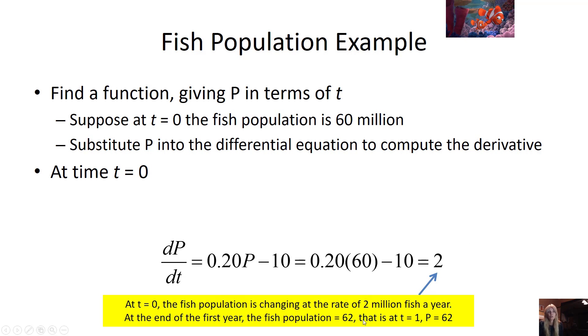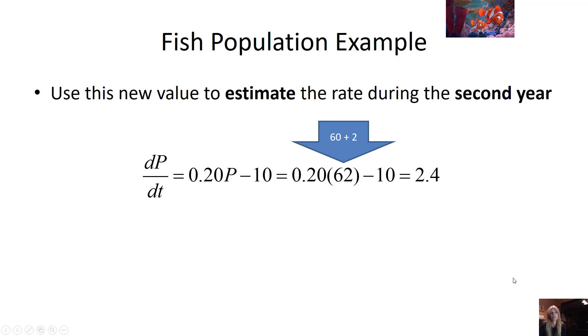So I could use this then to figure out, well, then the next year, if it's changing at 2 fish per year, I take where I started, the 60, and then I would add the rate that it's changing, and then I'd get the next year. So at t equals 1, my population would be 62 million.